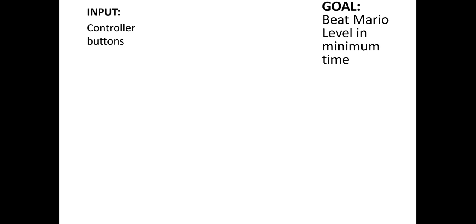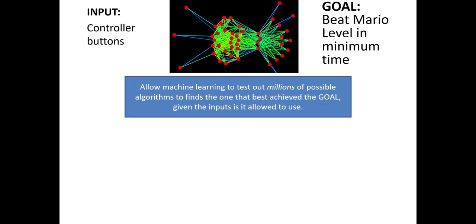From the perspective of the person developing the machine learning algorithm, this is all they actually did: they let the algorithm know what it could use as inputs, explicitly told it what its goal was, and asked it to achieve the best version of that goal. But in the middle — the actual algorithm getting built — the exact set of math equations, what you see when you look at a neural network, is really just a complex interconnected set of math equations. The person building it didn't have much to say about how that specific set of equations should develop — it tested out millions of different potential algorithms, settling on the one that best achieved the goal.